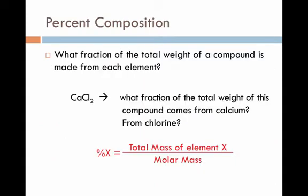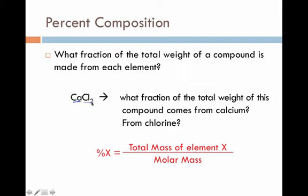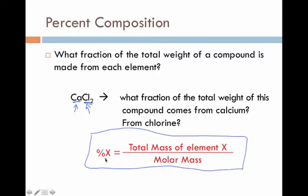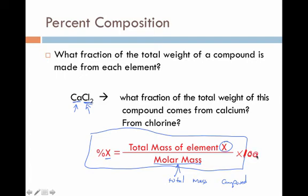To wrap things up, we're going to finish with percent composition. We want to know what fraction of the total weight of a compound is made up from each individual element. The equation is: percent of element X equals the total mass of element X divided by the molar mass of the compound, multiplied by 100. It's the part divided by the whole times 100.